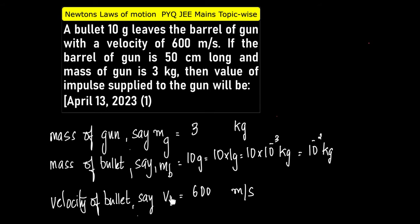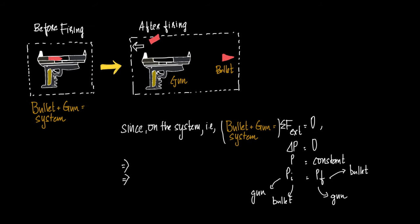Now let us try to understand what the question demands. We have a gun, and this whole diagram represents the gun and the bullet — the bullet being represented by the red one. So we have gun and bullet as a system: bullet plus gun together, considering this complete system before firing and after firing.